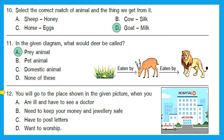Question 12: you will go to the place shown in the given picture when you — this is a picture of a hospital. When do we go to a hospital? When we are either sick or ill and have to see a doctor. Option A is the right answer.